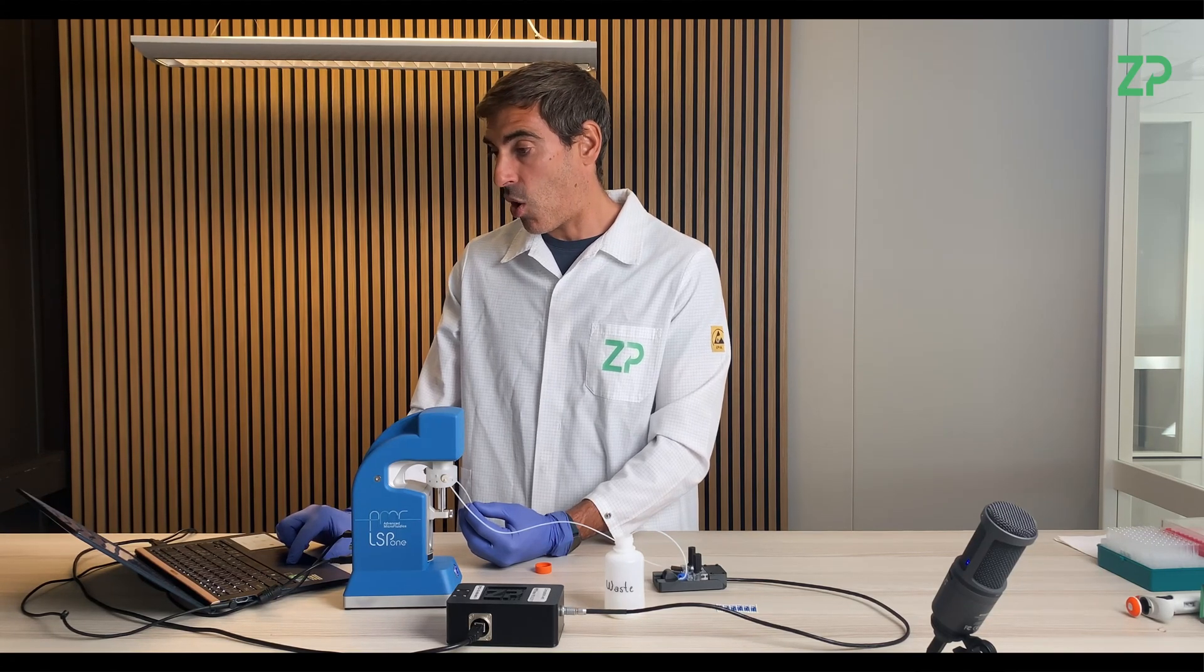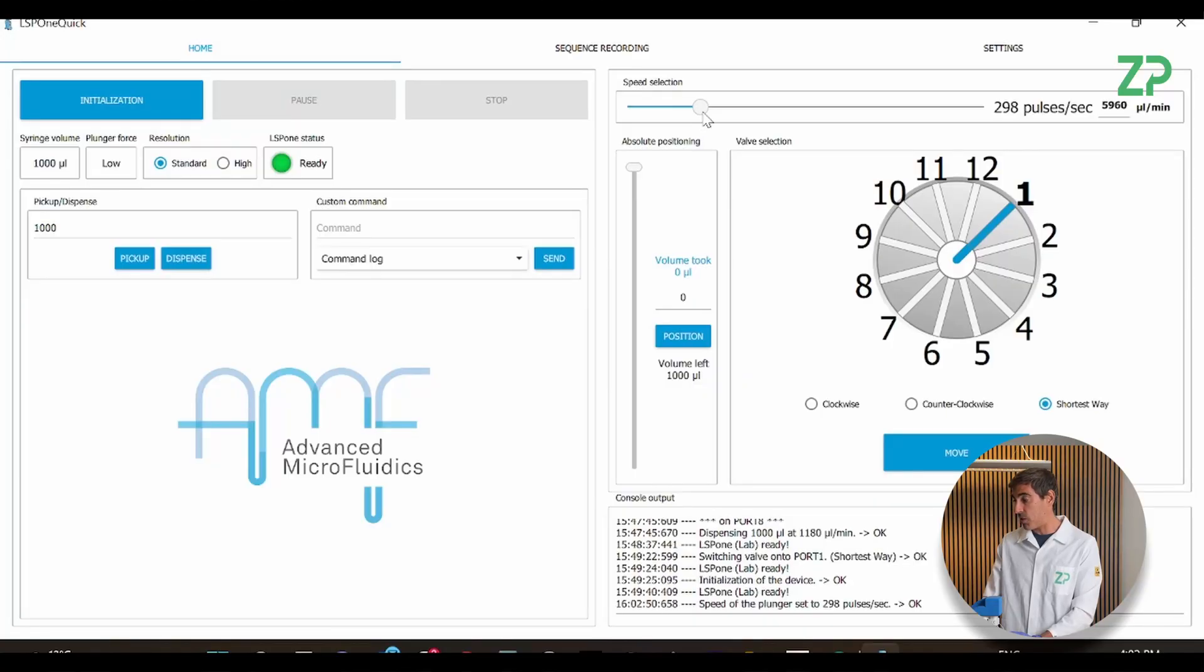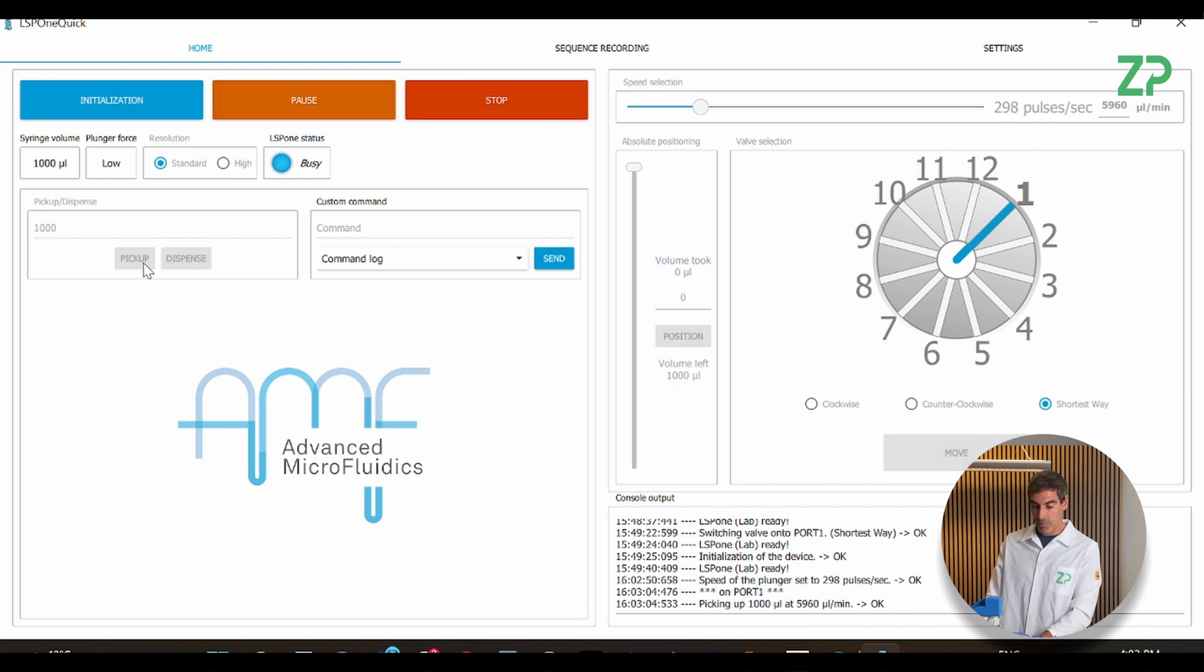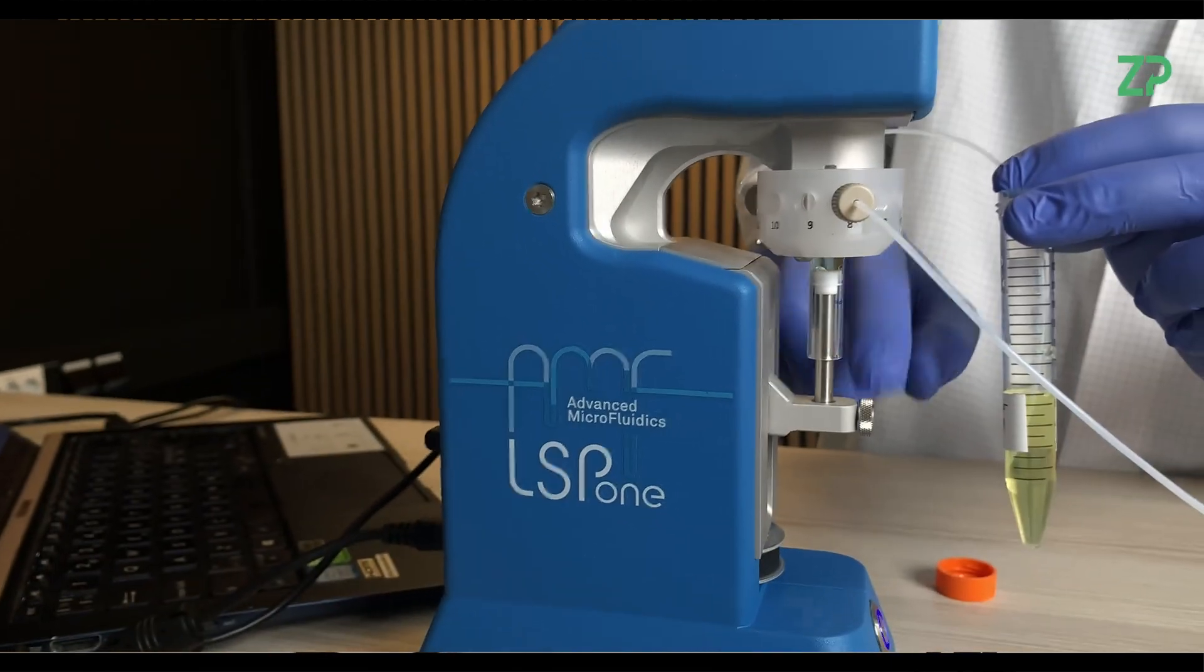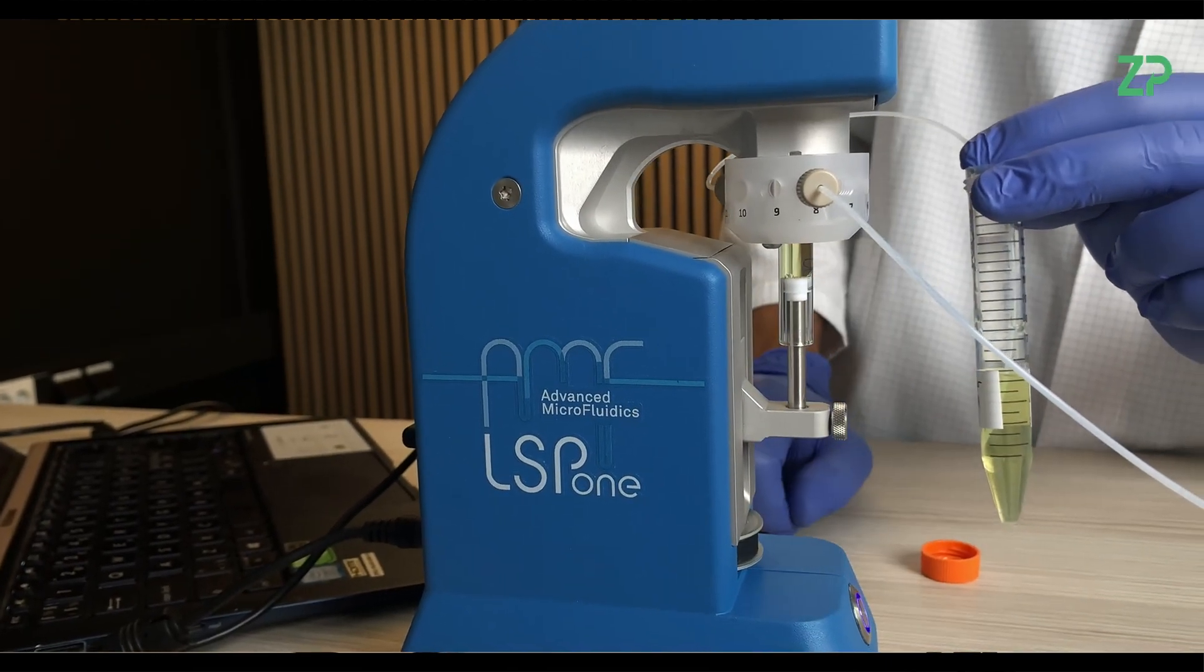And now I am on the software for the pump, but this could also be a script in Python. I'm going to select from channel 1. I'm going to select to pick up at a relatively high speed, so 298 pulses per second. I'm going to pick up one milliliter. So now you see the syringe is filling with the solution.